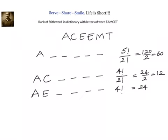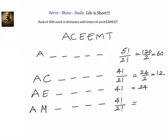Next we go to AM. If AM is fixed, then we have to fill the remaining slots with C, E, E, T. We have to take care that E is repeating, so that is 4!/2! = 12.